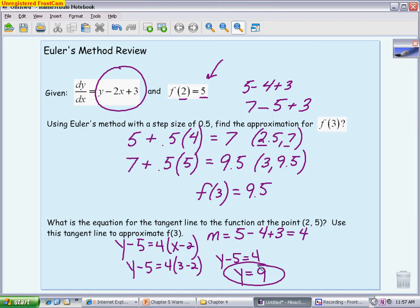And you can see these are pretty close. Euler's approximation gave us a value of 9.5 when I put 3 in. And the tangent line approximation gave us a value of 9. And it should be pretty close because we had a relatively small step size. We only took two steps. And my tangent line should be a pretty good approximation if I'm close to the point of tangency. 3 is not too far away from the point 2.5.